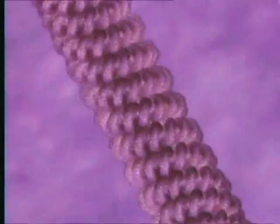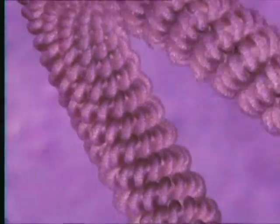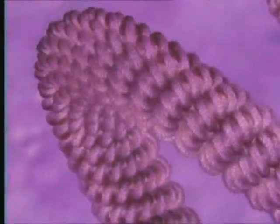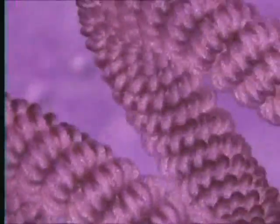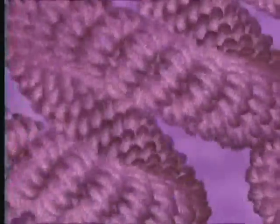This fiber is then looped and coiled yet again, leading finally to the familiar shapes known as chromosomes, which can be seen in the nucleus of dividing cells.